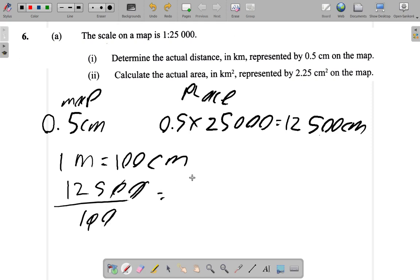What I have is 125 metres. So remember, 0.5 times 25,000, that's 12,500 centimetres. I want metres. I divide it by 100. I get 125 metres.